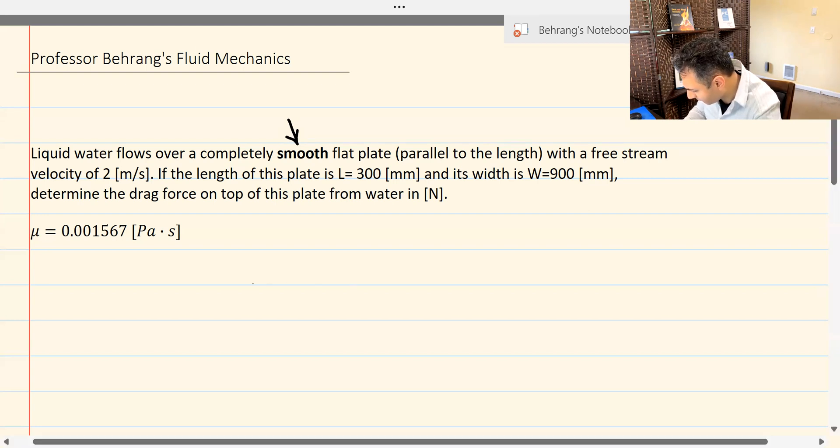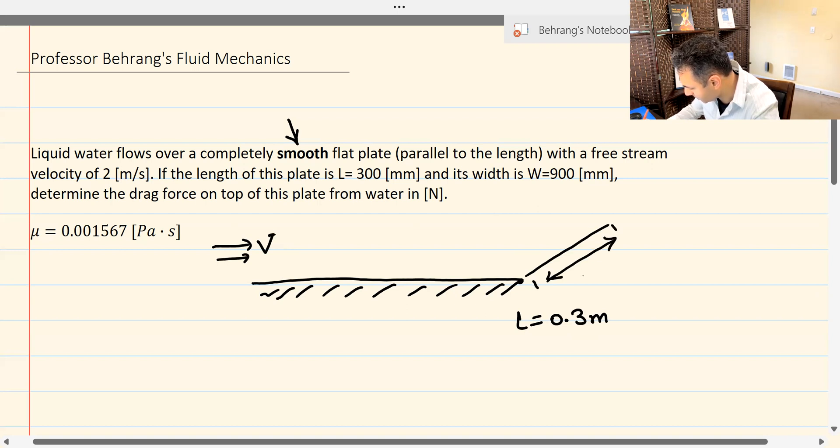So let's see what we have. We have the flat plate. This is our flat plate. And so this is the velocity. Velocity is given at two meters per second. And L here is given as 300 millimeters. I have to convert it to meters because everything has to be basic SI units. The width of the plate is given as 900 millimeters, which is 0.9 meters. So this is the plate we are dealing with, and we want to find the total drag force on this.